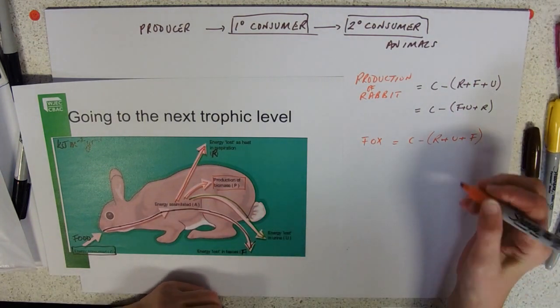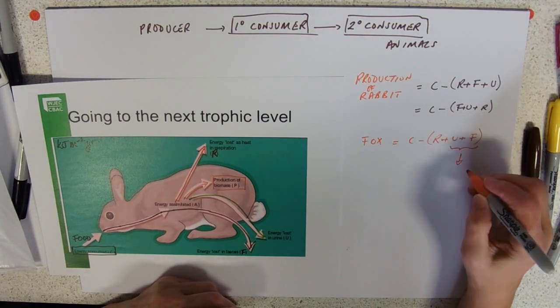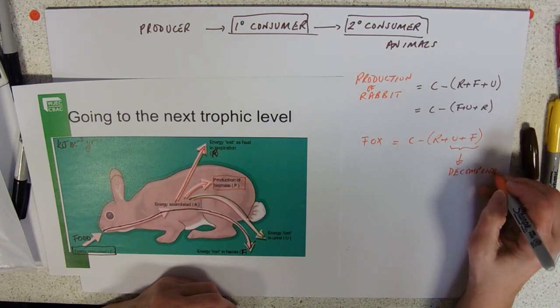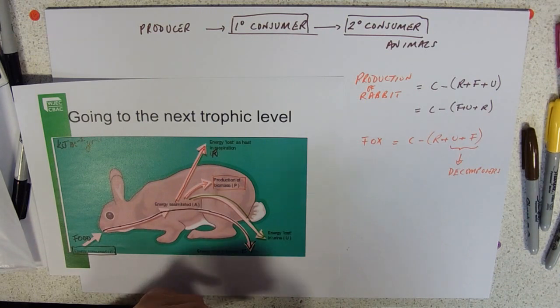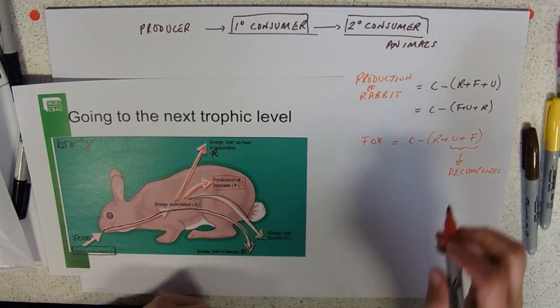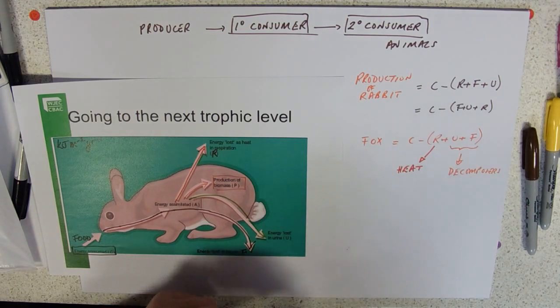Just a reminder: urine and faeces, they all go off to decomposers eventually. You might go through a detritivore or two first. The respiration, of course, is lost as heat to the atmosphere.